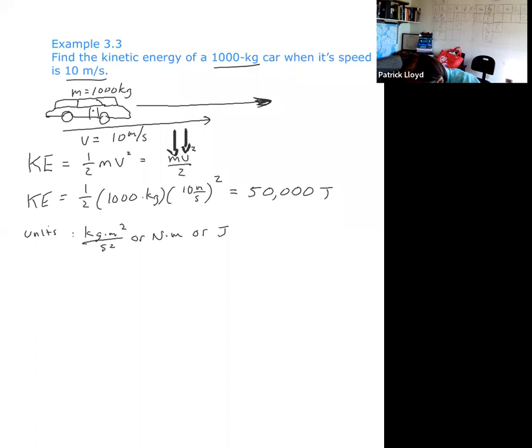I'm going to put joules here, and that would be perfectly fine, 50,000 joules. So that's how much kinetic energy the automobile has when it's moving at 10 meters per second, which is around 22 miles an hour.